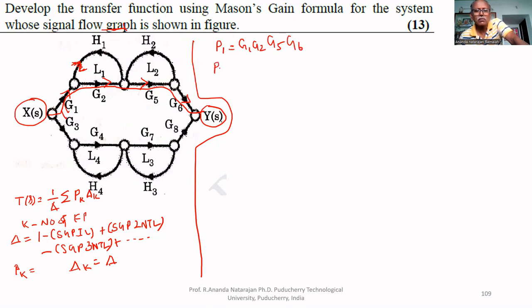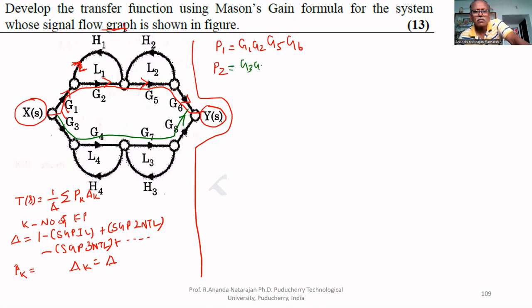For forward path 2, we travel in the other direction through the graph. That gives p2 = g3·g4·g7·g8.